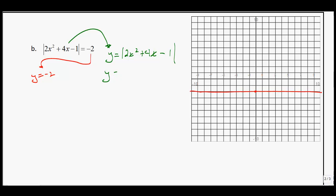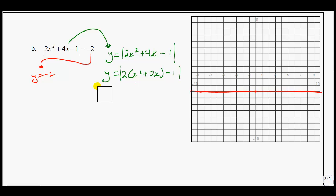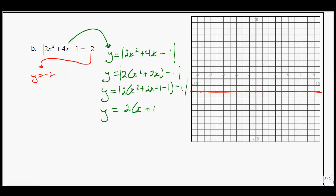We take the middle term — the 2x — divide by 2, and square it. After completing the square we get the absolute value of 2 times (x plus 1) squared minus 1. The vertex is at negative 1 in the x-direction and negative 1 downward.